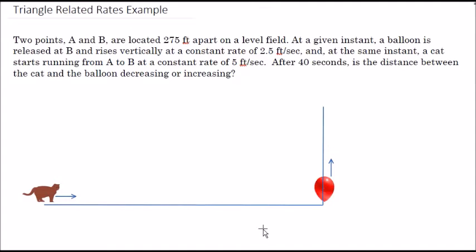All right, so this is a related rates problem that's going to involve some right triangle calculations. This one's a little bit more difficult than some of the other related rates problems because it involves a lot of context as well as a somewhat tricky situation here in terms of positives and negatives.